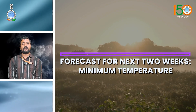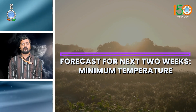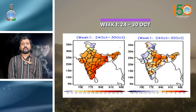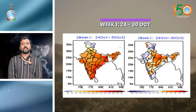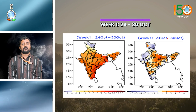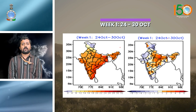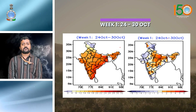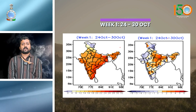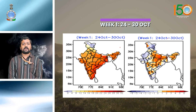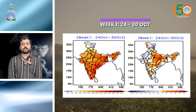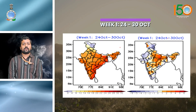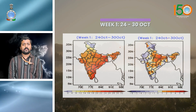Coming into the minimum temperature forecast from the extended range, for the first week, minimum temperature is forecasted to be above normal over parts of Central India, Maharashtra, Karnataka, Telangana, Rayalaseema, Uttar Pradesh, and over major parts of Odisha and Northwest India.